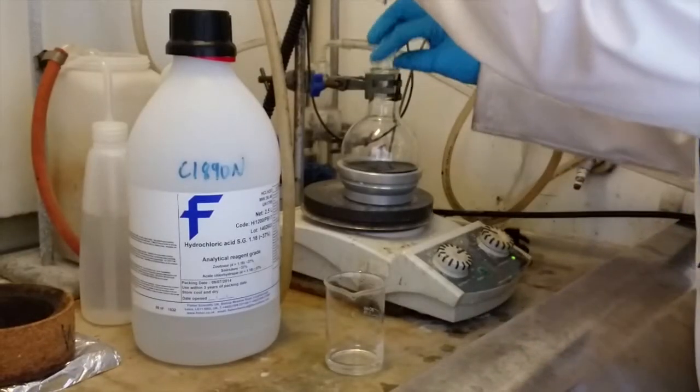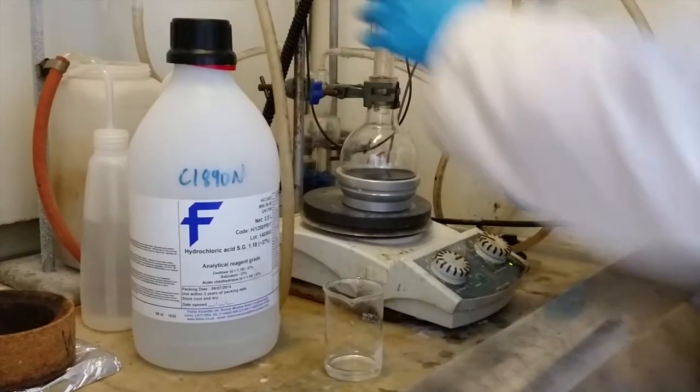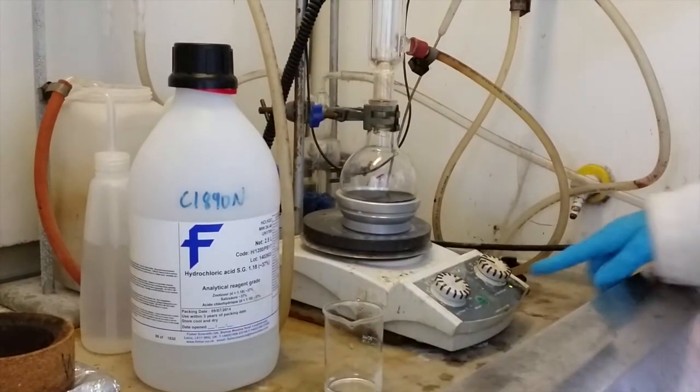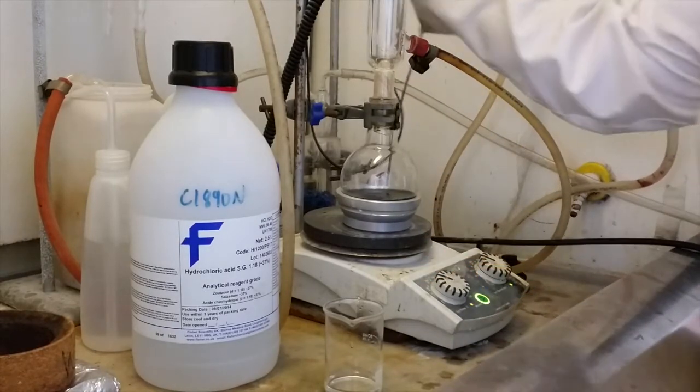Finally add the tin 2-chloride dihydrate to the reaction mixture and set the reaction mixture heating to 60 degrees. Ensure that the water is turned on on the condenser.